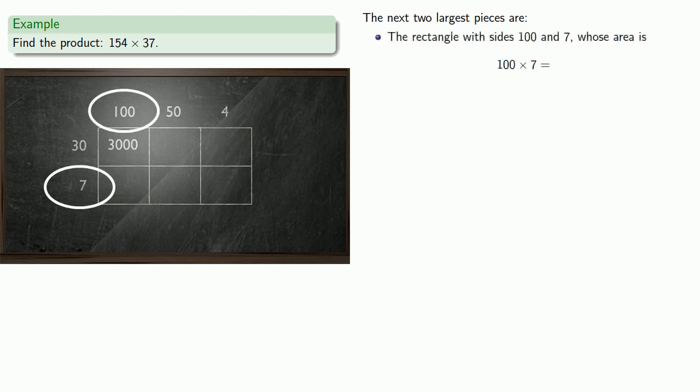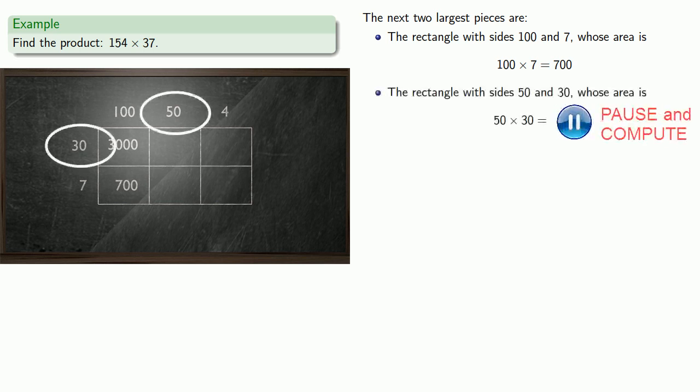The next two largest pieces are going to be the rectangle with sides of 100 and 7, whose area is 100 times 7. That's 700. And the rectangle with sides 50 and 30, which has area 1,500. And again, these are the three largest parts of the area.